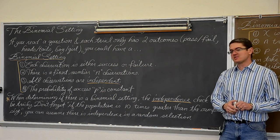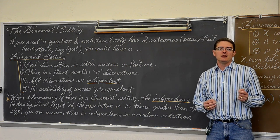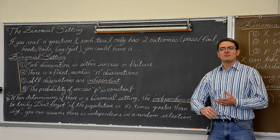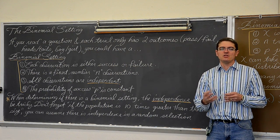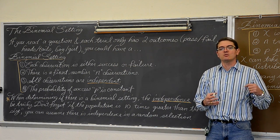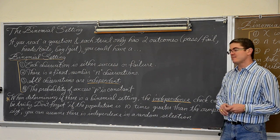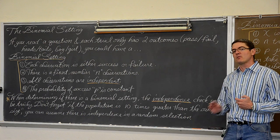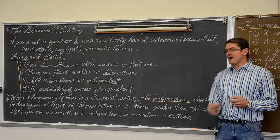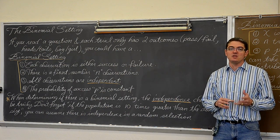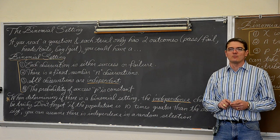When determining if there is a binomial setting, the independence check can be a little tricky. Remember doing quality control at the end of an assembly line — they only make a certain number of items, it could be millions or just a couple thousand. If you find a faulty item, you are theoretically lowering the probability of finding your next faulty item. As long as your population is greater than ten times the sample size, you can assume independence as long as it is a random selection. This statement gets used a lot — it should appear in every statistical test you run because it is required for every standard deviation formula we are going to learn.